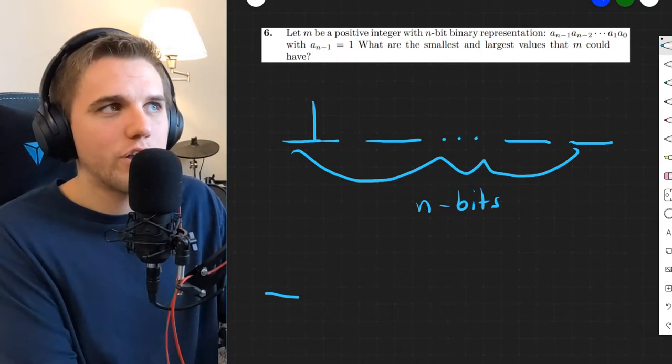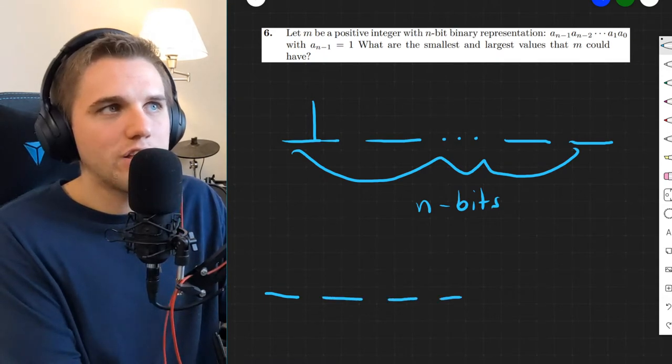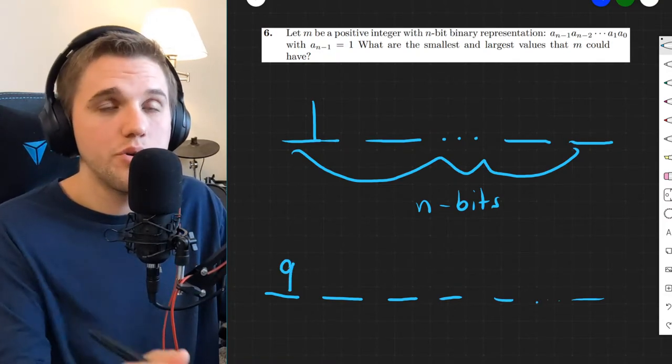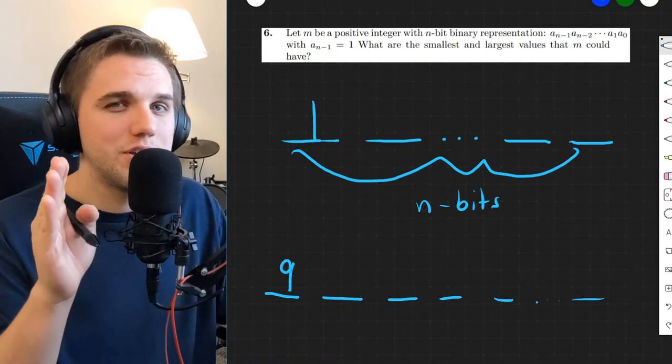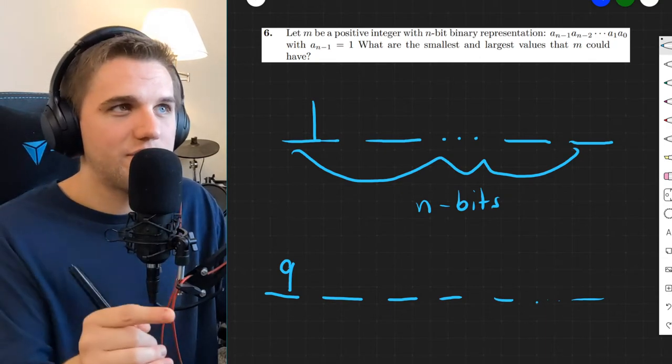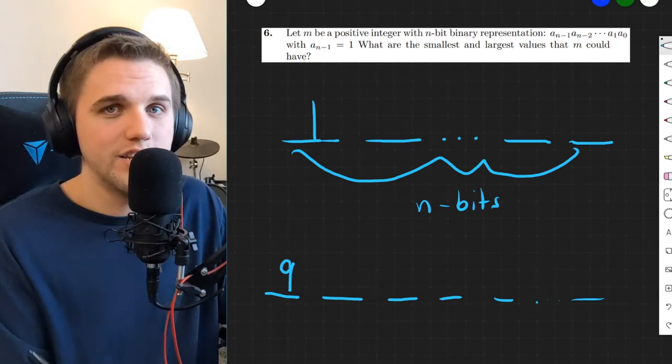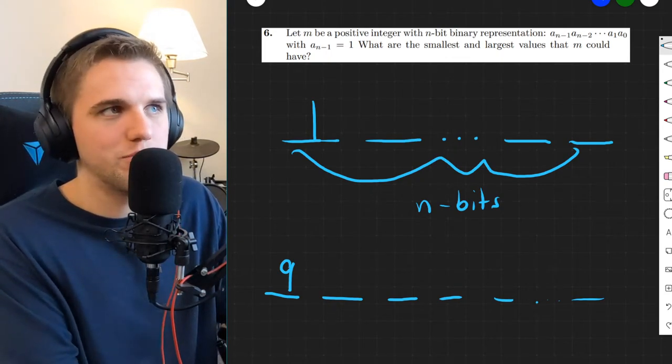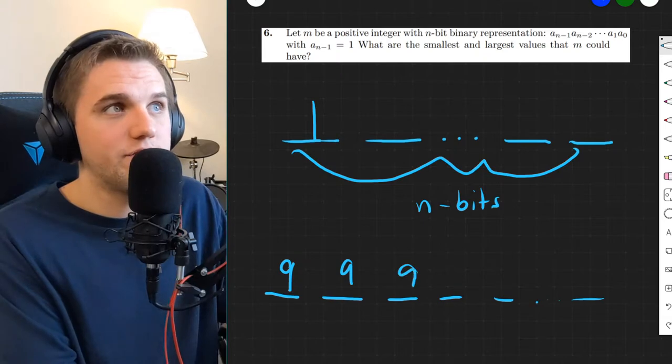Think about how you would answer this question in base 10. If I told you that there were n digits, and the very furthest left digit was a 9, and I told you, build the largest number you can where the left digit is 9 and there are n digits, what would you put in all of these placeholders? If you were to try to make this number as large as possible, you would put nines everywhere.